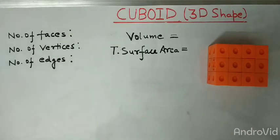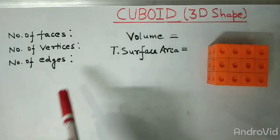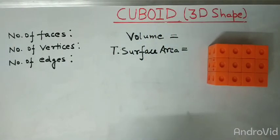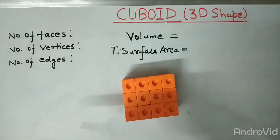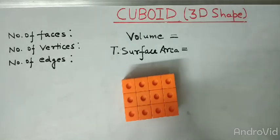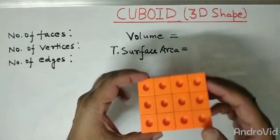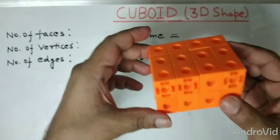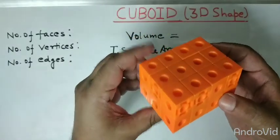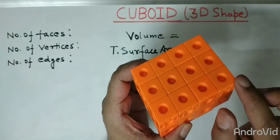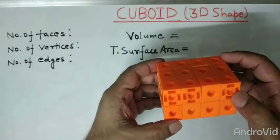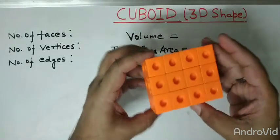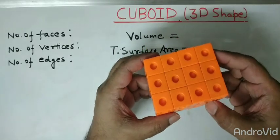Hello friends, I hope you are all doing well. In this video today we will be discussing the cuboid. A cuboid is a 3D shape, meaning a shape having three dimensions. It has length, breadth, and height. Here you can see I have taken a rectangular cuboid. We call it a cuboid because it is a 3D shape having length, breadth, and height. Now let us find out how many faces, vertices, and edges this cuboid has.